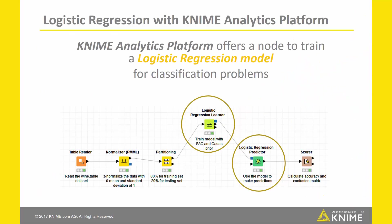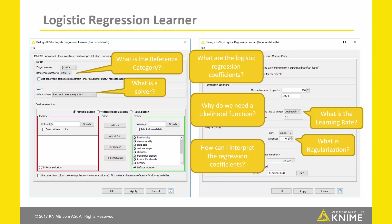KNIME Analytics Platform offers a native node to solve classification problems with the logistic regression algorithm. But do you already know what a reference category is? What regularization is? What the coefficients are, where they come from, and why everybody talks about the likelihood function when it comes to logistic regression?